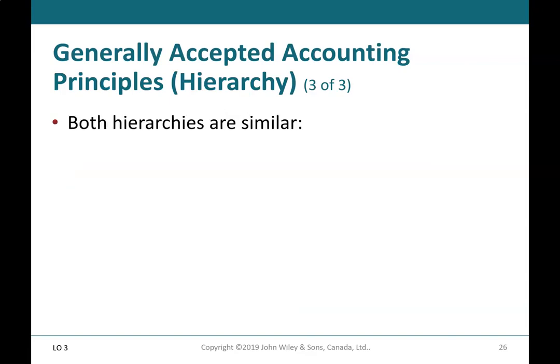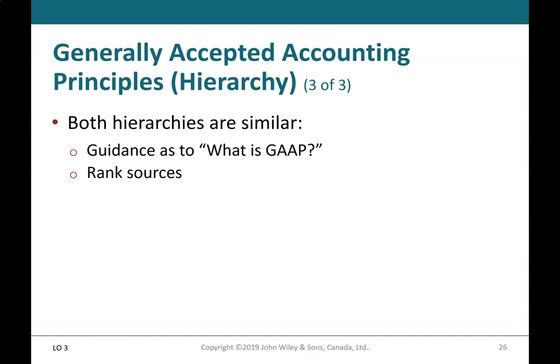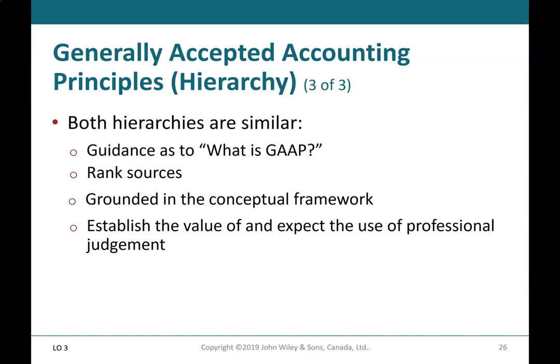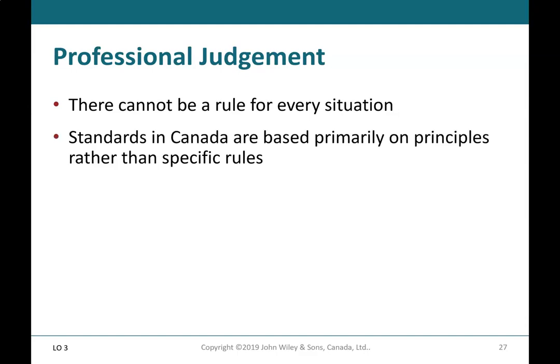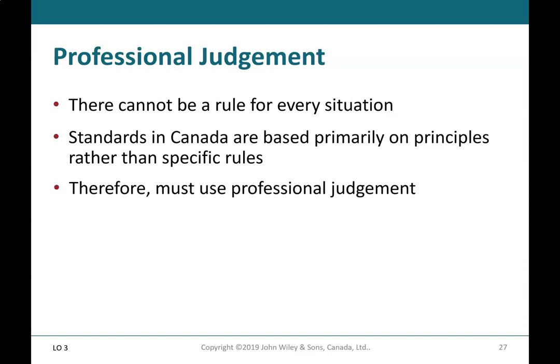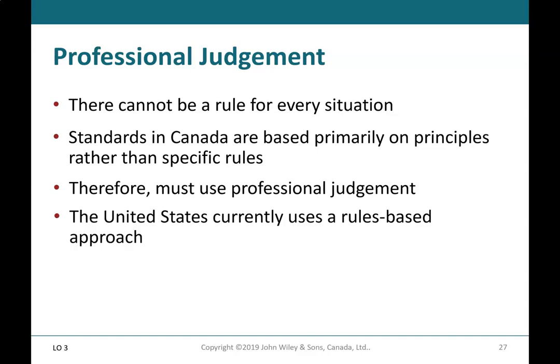Generally accepted accounting principles hierarchy (3 of 3): Both hierarchies are similar — they provide guidance as to what is GAAP, rank sources, and are grounded in the conceptual framework. They establish the value of and expect the use of professional judgment. There cannot be a rule for every situation; standards in Canada are based primarily on principles rather than specific rules. Therefore, professional judgment must be used. The United States currently uses a rules-based approach.